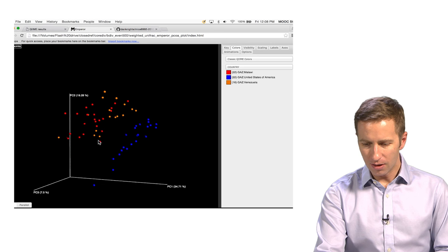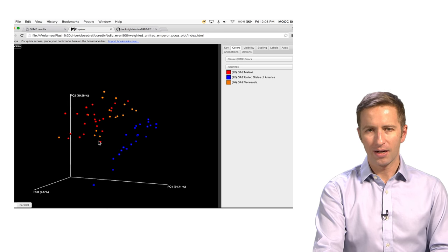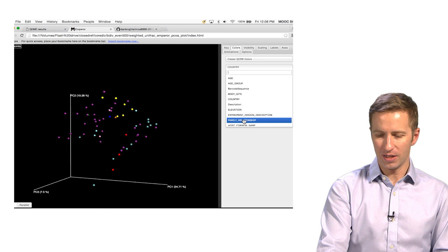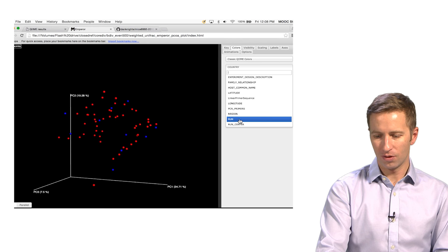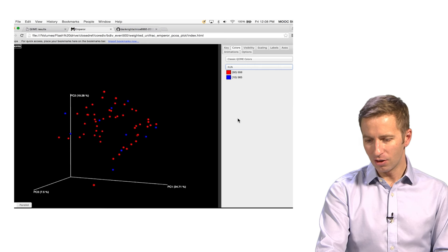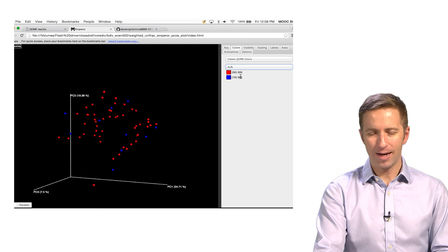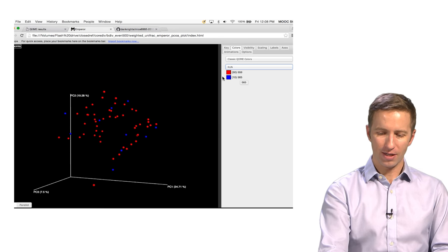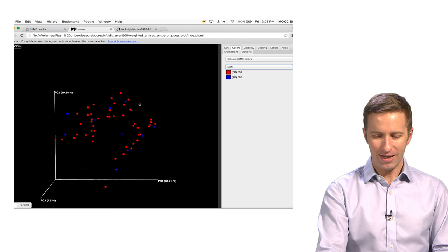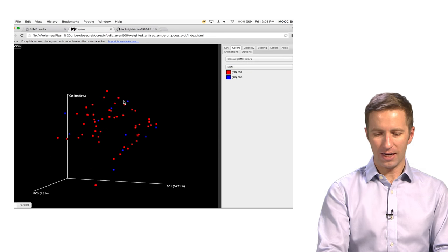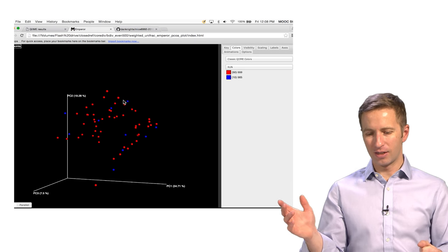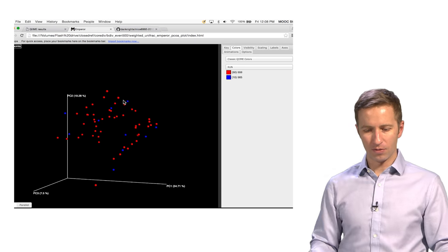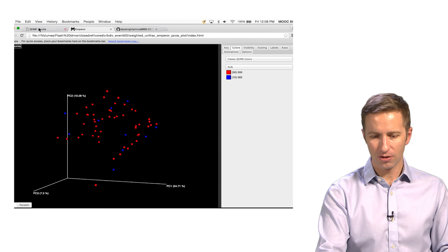Now, this is a very nice way of examining whether any of the factors in your experiment are related to the microbiome. So for example, let's look at sequencing run. These data were run on two different sequencing runs. It would be really bad if the data split according to sequencing run because we'd have a big batch effect. But instead,